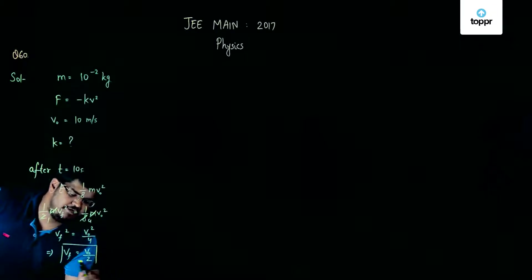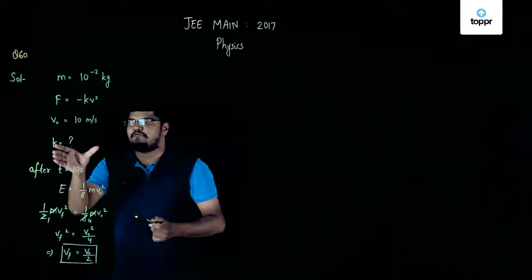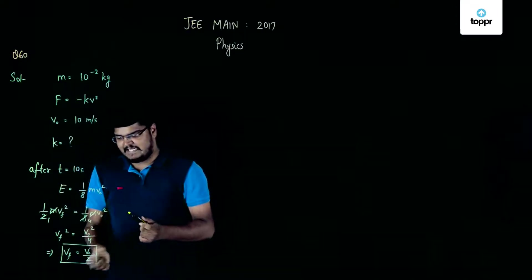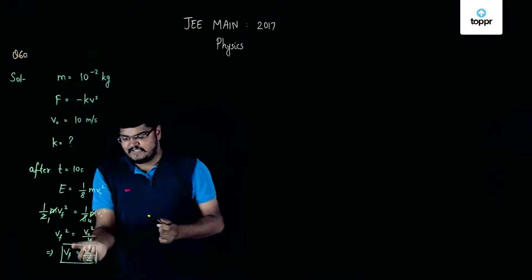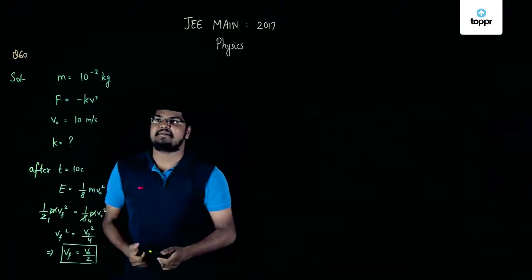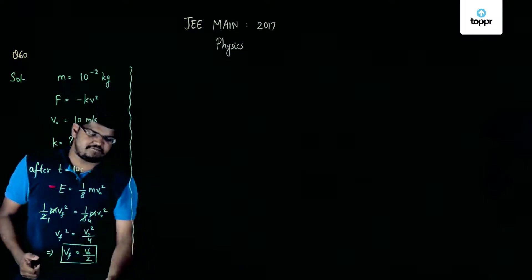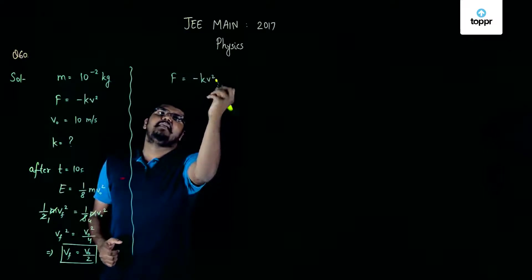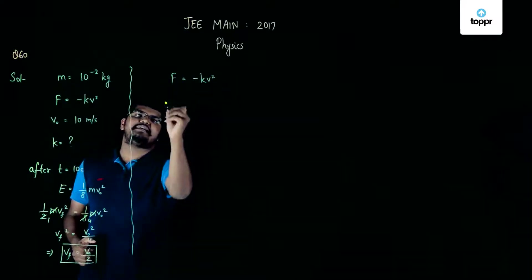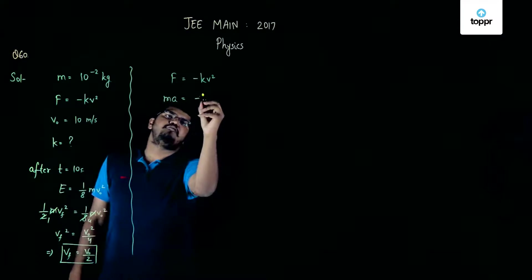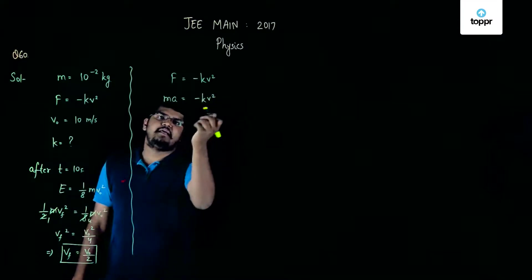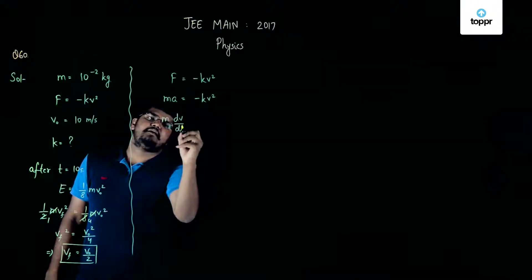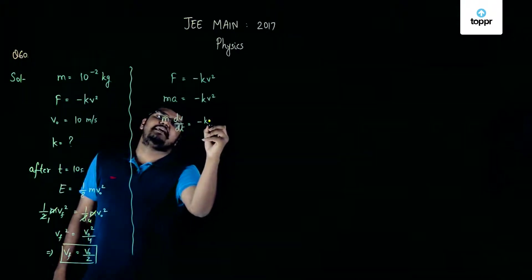We have to find the value of k, where the initial velocity is 10 m/s and the final velocity is v₀/2, or 10/2 = 5 m/s. Based on this question we can say that F = -kv², and this F is equal to ma = -kv². Now, this acceleration a is actually dv/dt, so m(dv/dt) = -kv².